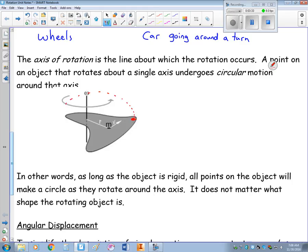It doesn't really matter where the point is. So, all points on this object follow a perfect circle. It doesn't matter what shape that object is.